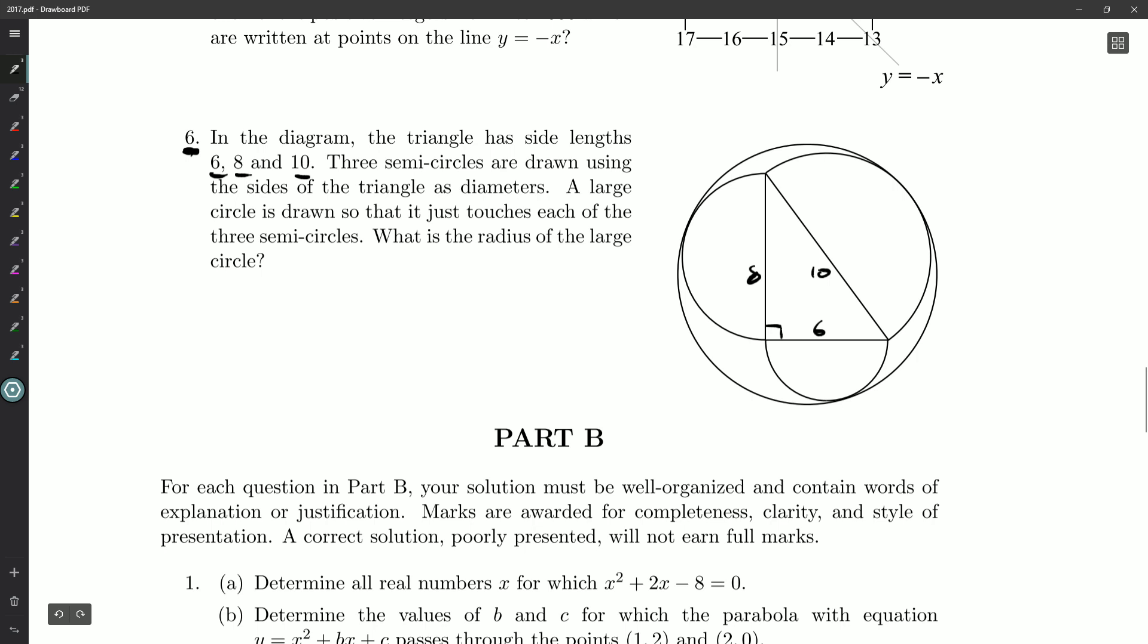Three semicircles are drawn using the sides of the triangles as diameters. So the center here will be the center of that triangle, and I can also tell the radii. The diameters are twice the radii. I'll just make little notes as we read along. A large circle is drawn so that it just touches, fancy word for that is tangent, each of the three semicircles. What is the radius of the larger circle? So we need the radius of the big circle.